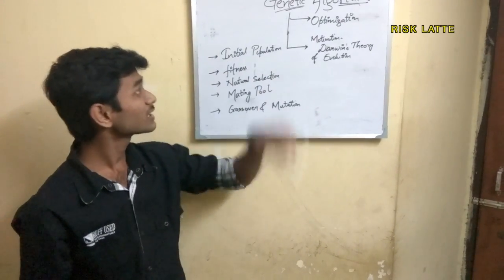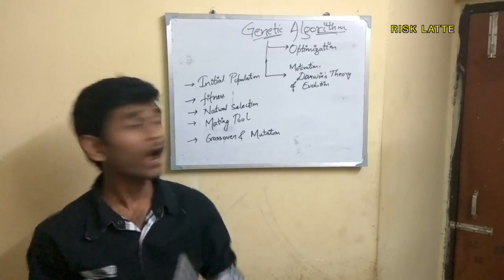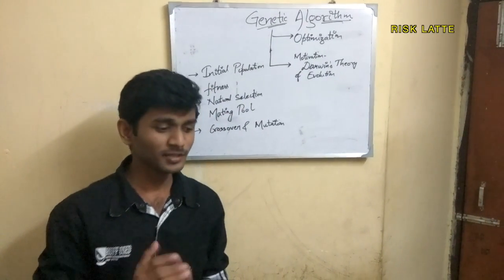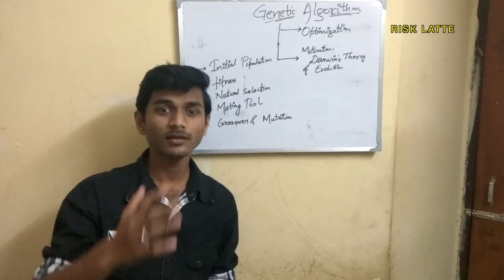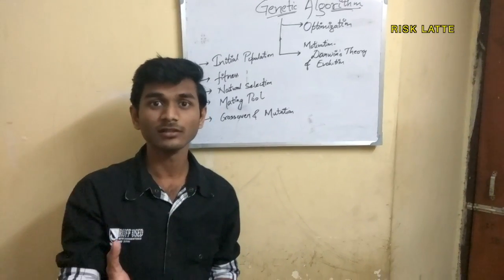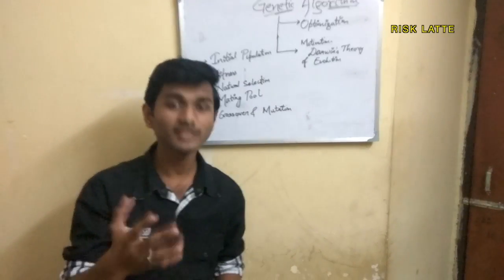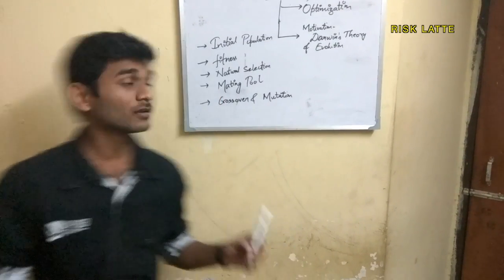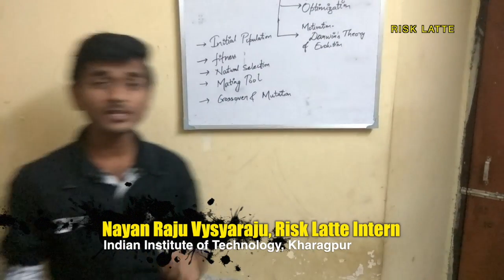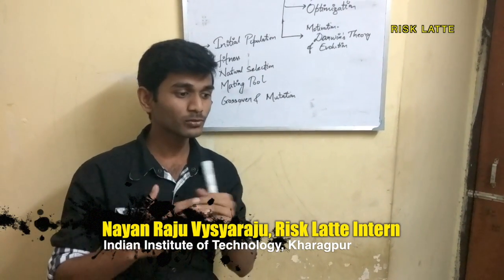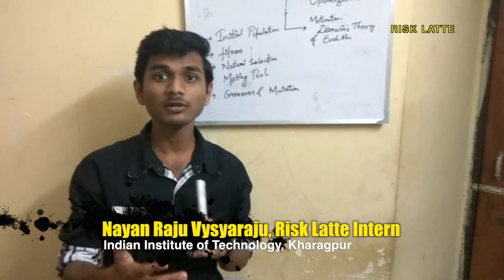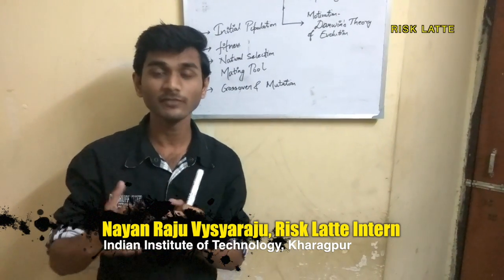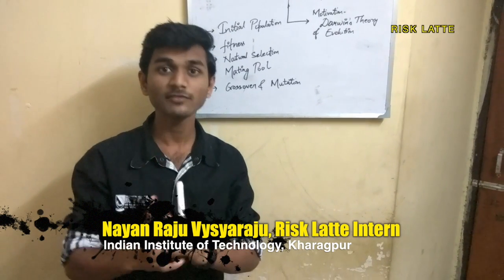So how do we initialize the population? Initial population is initialized randomly based on the constraints given in the question. If it is unconstrained then we have a wide range to cover. Then next comes fitness. Fitness is basically to optimize the problem — if it is a maximum problem we have to maximize the fitness function, and if it is a minimum problem we have to minimize the fitness function.